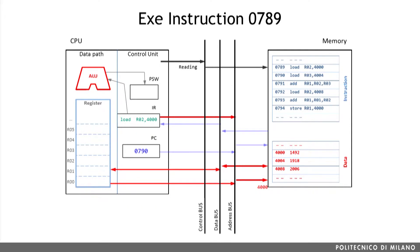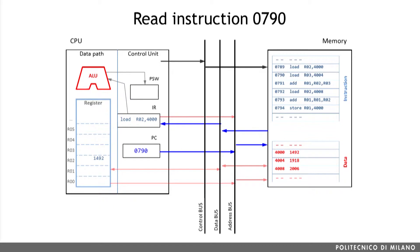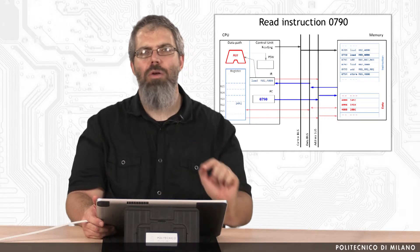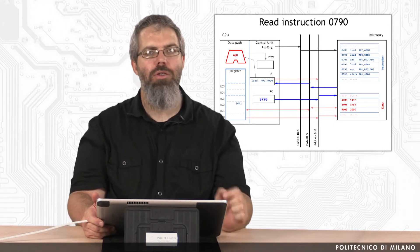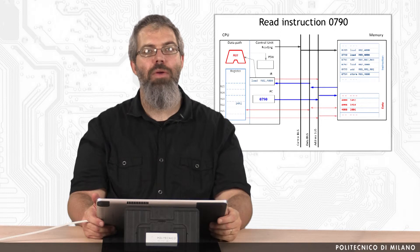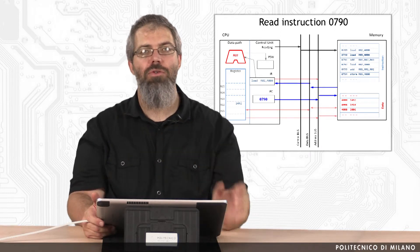In this specific case, the value we are looking for is stored at the 4000 location, and because of the control unit sending a read command, we can load the value stored at location 4000 into register R02. Once this is done, we are ready to proceed with the next instruction, which is the one stored in the program counter. To know what we have to do to execute the new instruction, we perform the same operation we went through for instruction 0789.